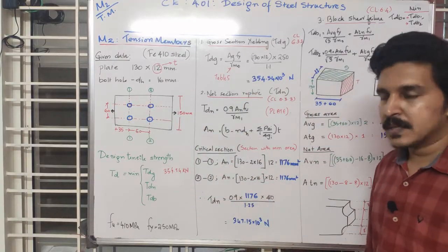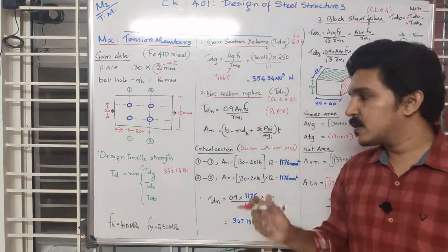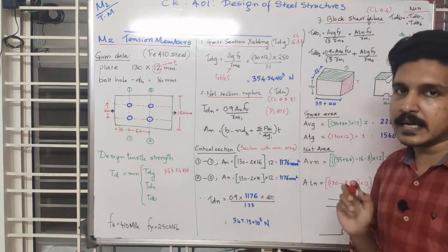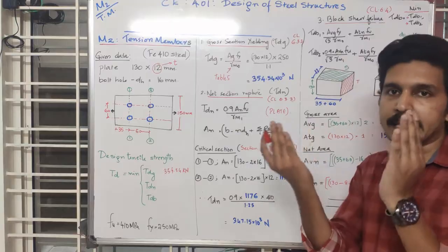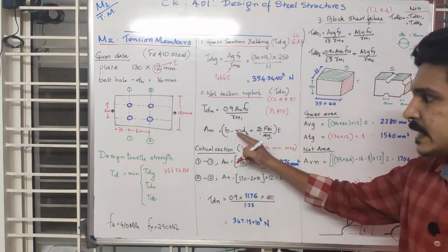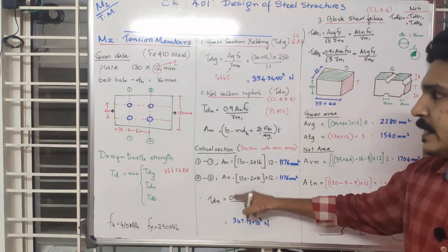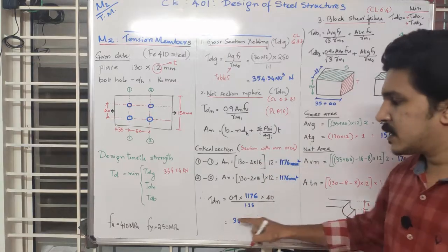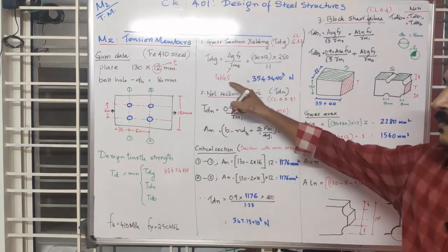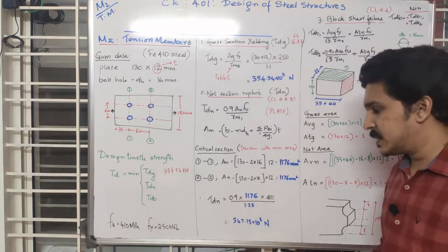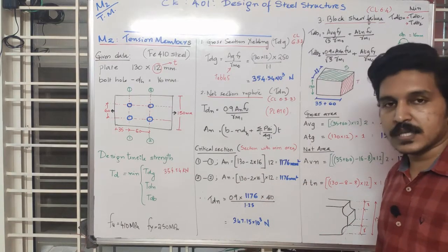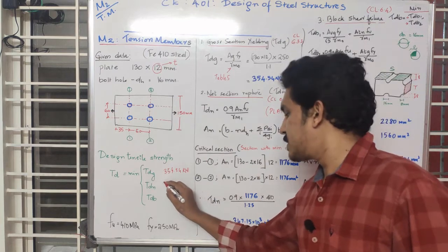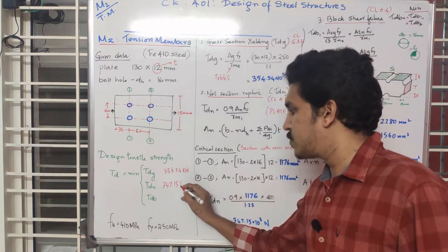The minimum net area is 1476 mm². Substituting An into the TDN equation with FU equal to 410 MPa and gamma M1 equal to 1.25, we get TDN equal to 347.15 kN.